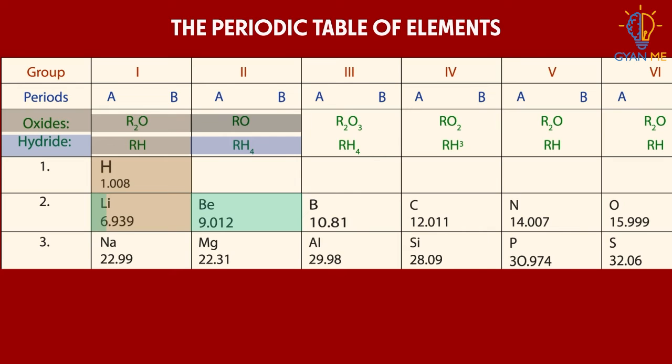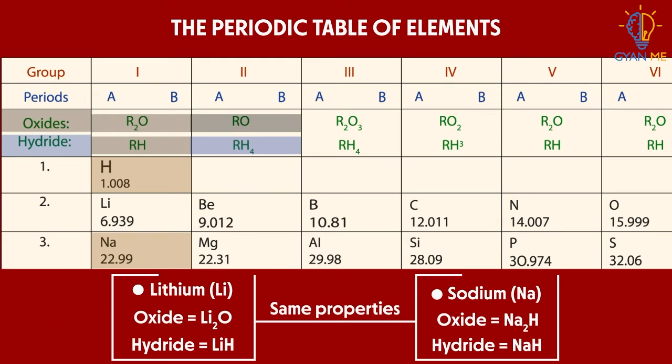Now accordingly, Mendeleev arranged the elements in ascending order based on their atomic mass and their oxides and hydrides up till the sodium element. When he reached here, he found that the oxide of sodium and its hydride had the same properties as those of element lithium.